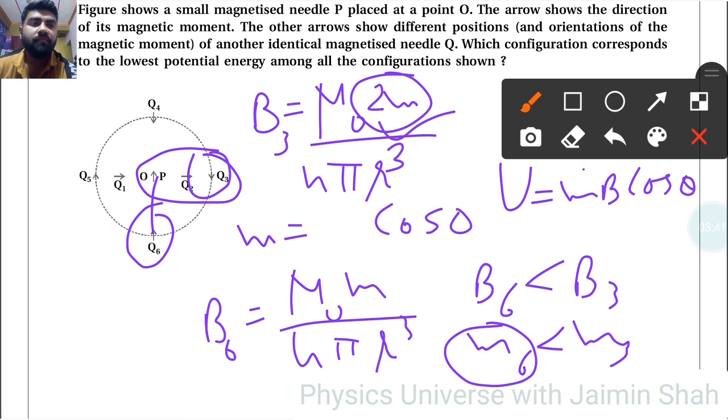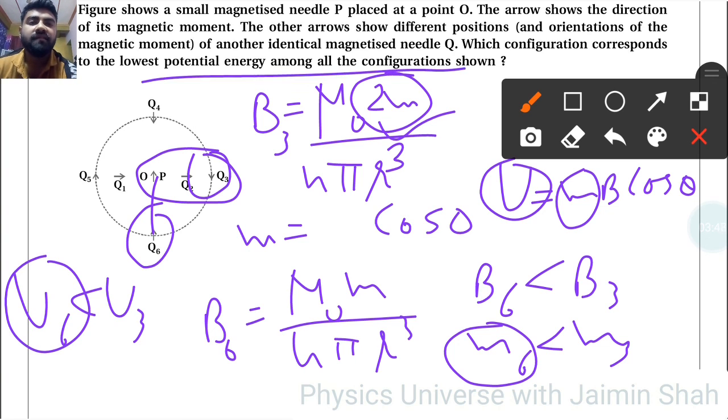So that is why if M is lesser, then U will be lesser. So U6 less than U3. So lowest potential energy is for 6th configuration, P-Q6. For P-Q6 we will get lowest potential energy.